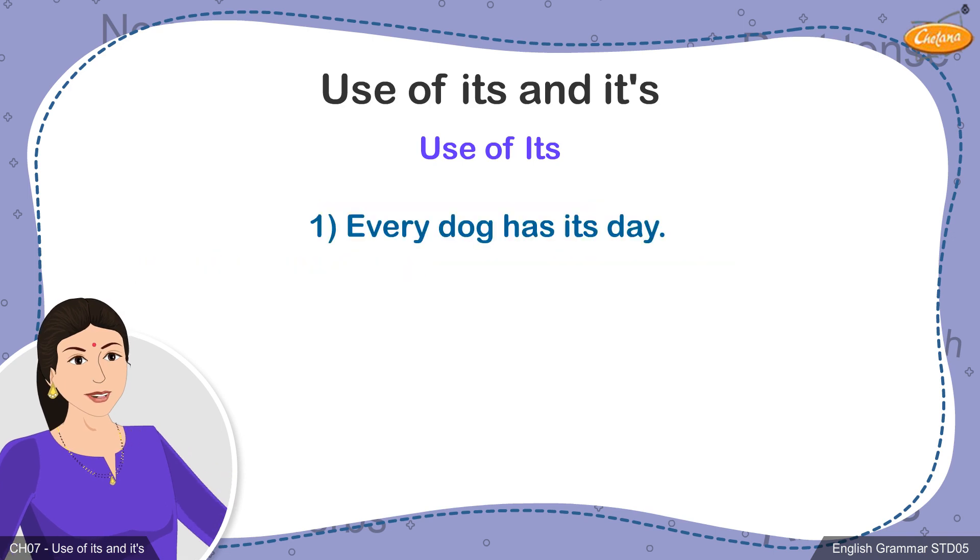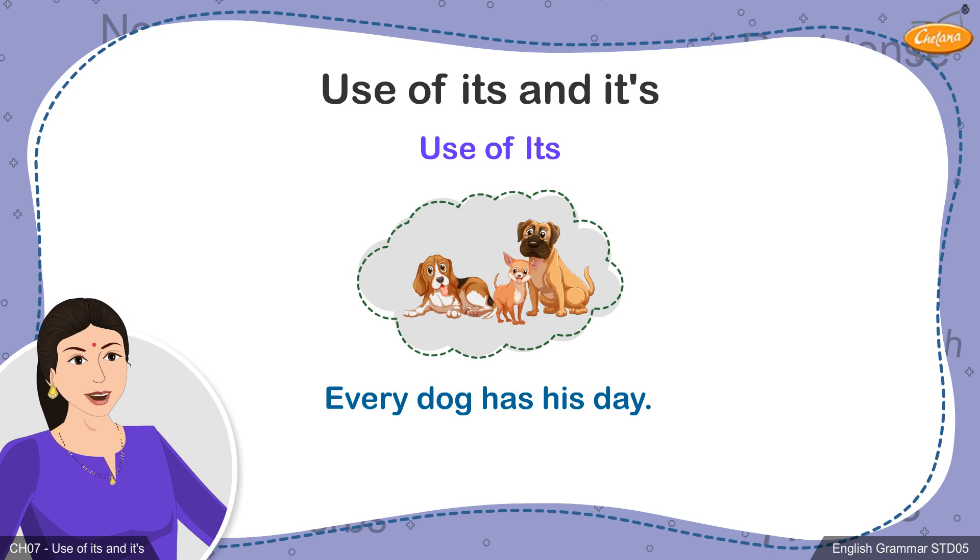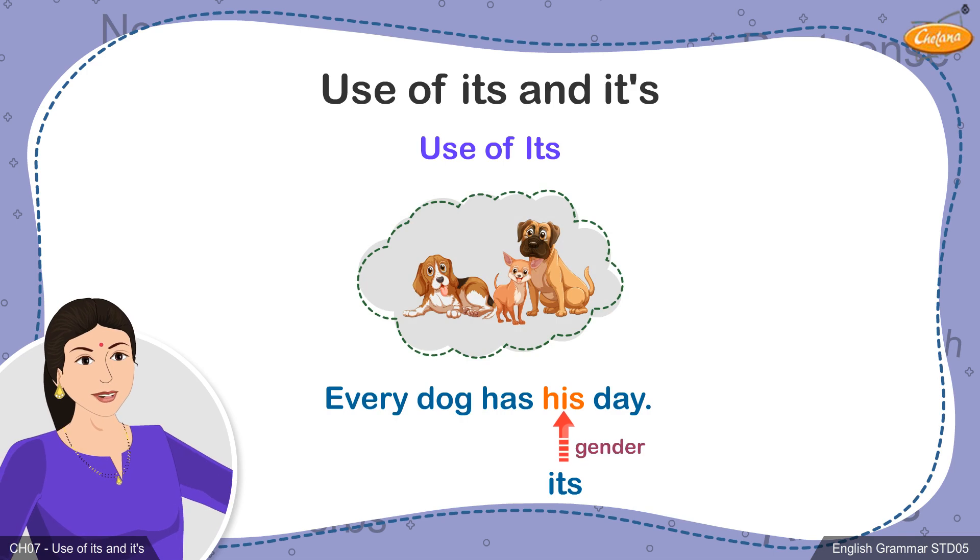You can check if you have used this pronoun in a grammatically correct manner by replacing its with his in some cases. If the sentence retains its meaning, then you have used its correctly. For example, every dog has his day. You can use his instead of its as the gender of the dog is masculine.